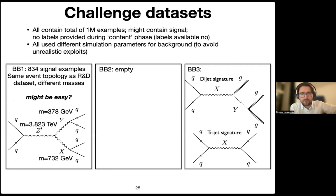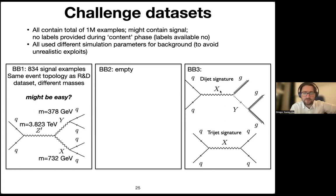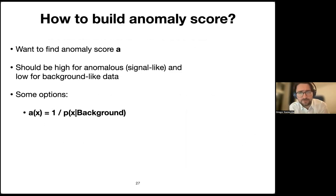There were three blind boxes. Black box one was close to the R&D dataset; black box two had no new physics (some methods produced false positives — interesting lessons there); black box three was more complicated. The current state of the art is that several methods easily detected black box one, nothing to detect in black box two, but there is still no anomaly detector that claims to have successfully identified black box three. So it remains an open problem.